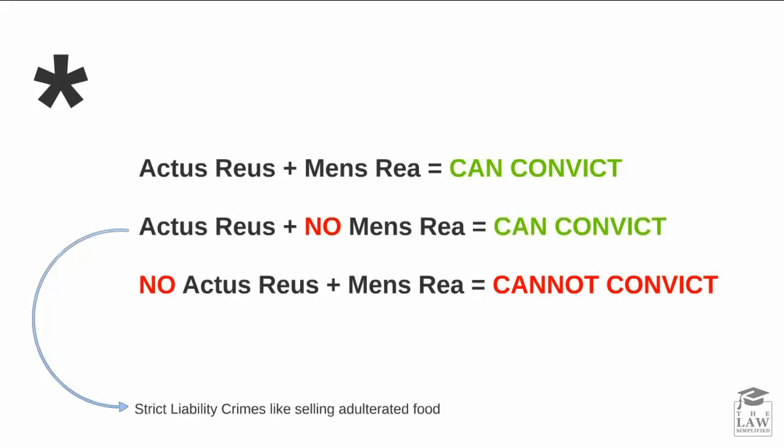Later on in this introduction and summary, we will look at inchoate offences or attempts, where things which are more than merely preparatory have been done, but the actus reus proper has not been committed. And yet, there is intent and we can assume that the person has gone 80% towards actually acting on it. There are convictions based on that as well, but for the crime proper, you cannot convict a person without an actus reus being present.